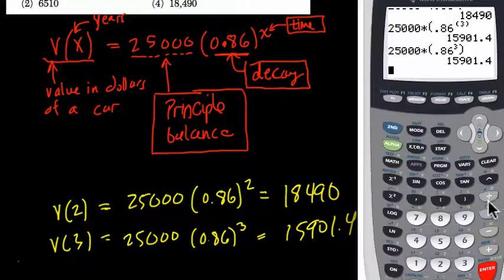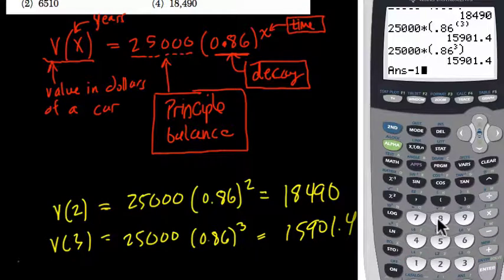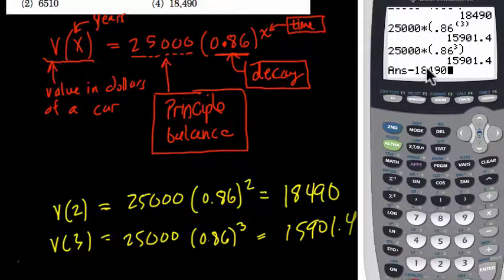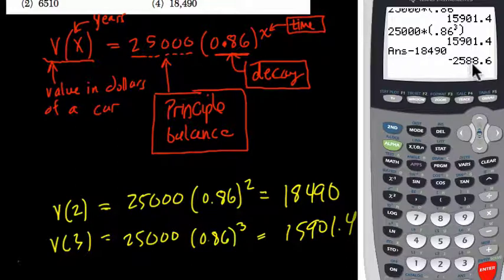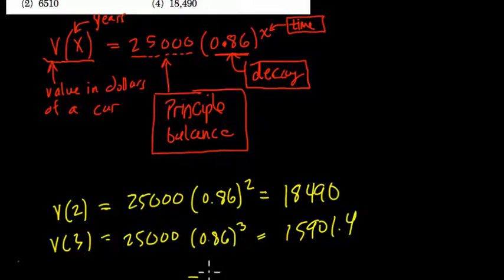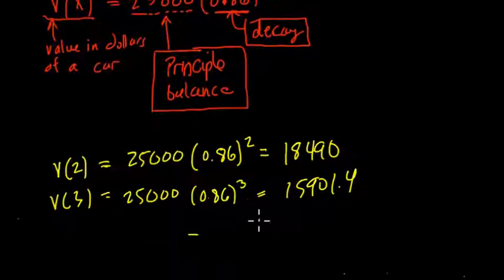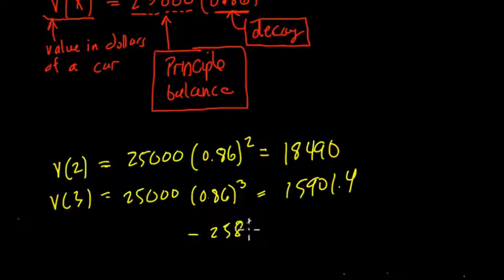and then I'm going to just subtract 18,490. I know we typically subtract the other way, but I know if I change the order that I subtract, I just get the opposite answer. So I get negative 2,588.6, right, negative, negative 2,588.6,